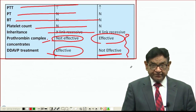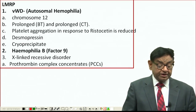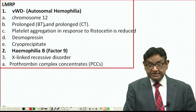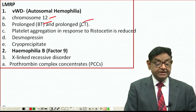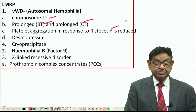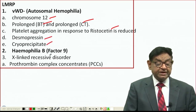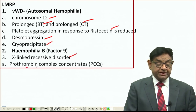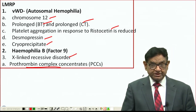Quick recap: von Willebrand disease is autosomal haemophilia, gene on chromosome 12, with prolonged BT and CT. Platelet aggregation in response to ristocetin is reduced but normal to ADP, collagen, and thrombin. Desmopressin is the treatment; cryoprecipitate can be given. Haemophilia B is due to Factor 9 deficiency, also X-linked, and is treated by giving prothrombin complex concentrate.